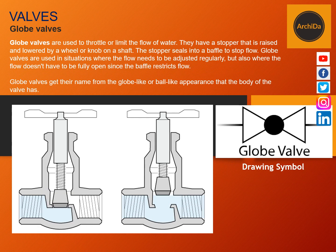Globe valves — similar to a gate valve, globe valves are used to throttle or limit the flow of water. They have a stopper that is raised and lowered by a wheel or knob on a shaft. The stopper seals into a baffle to stop the flow. Globe valves are used in situations where the flow needs to be adjusted regularly, but also where the flow doesn't have to be fully open since the baffle restricts the flow.